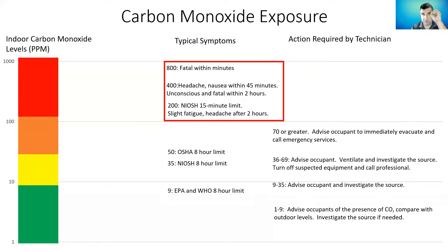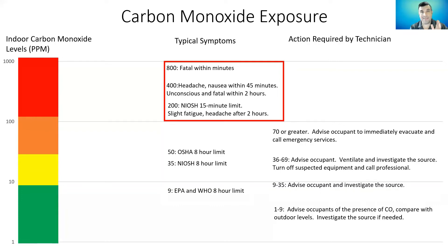Really, anything over zero needs to get our attention — we need to investigate why. But around 35 parts per million, that's when we need to start taking action. At 70, that's when we need to ventilate the building, get out, and call emergency services. Anything above 70 requires immediate, decisive action. Don't be afraid to take that decisive action — you may be the only person with the knowledge and equipment to make those decisions and save lives.